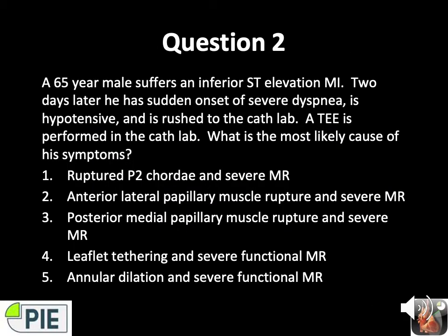Question number two: a 65-year-old male suffers an inferior ST elevation MI. Two days later he has sudden onset of severe dyspnea, is hypotensive, and is rushed to the cath lab where a TEE is performed. What is the most likely cause of his symptoms? Is it ruptured P2 chordae with severe MR, anterolateral papillary muscle rupture with severe MR, posteromedial papillary muscle rupture with severe MR, leaflet tethering with severe functional MR, or annular dilatation with severe functional MR?